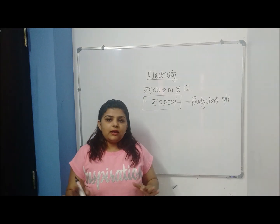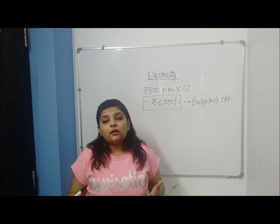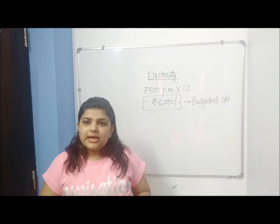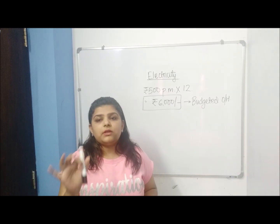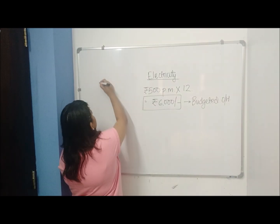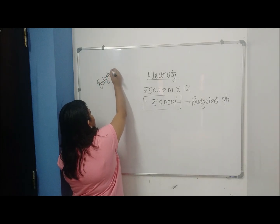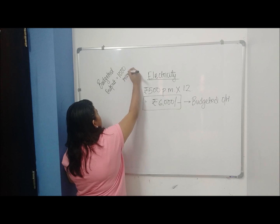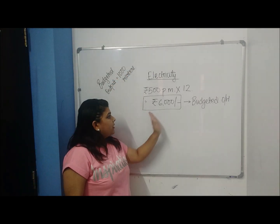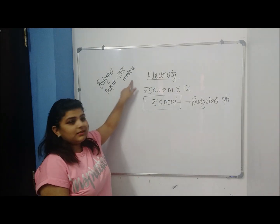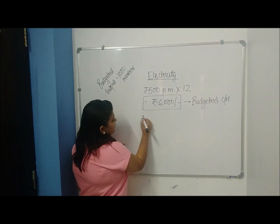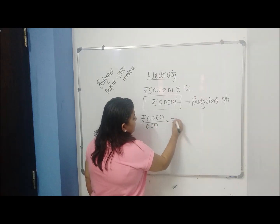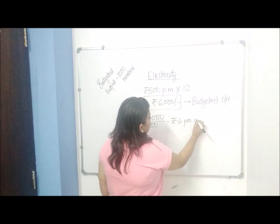Now again on day one, I also estimate how many markers I am going to produce in the coming year. That also I estimate. So I estimate that I am going to make, let us say, 1000 of these markers in the coming year. So my budgeted output is going to be 1000 markers.